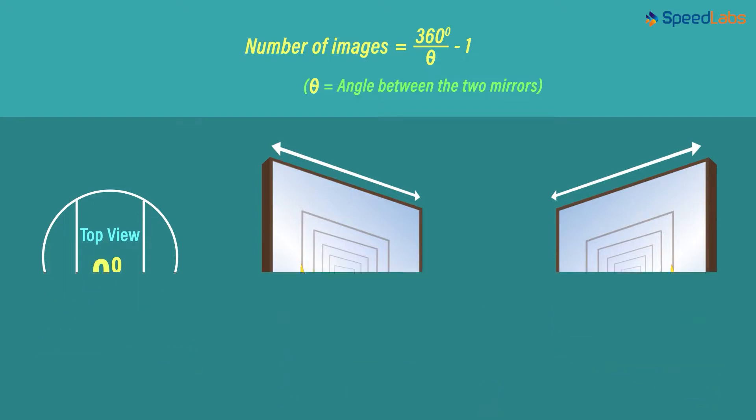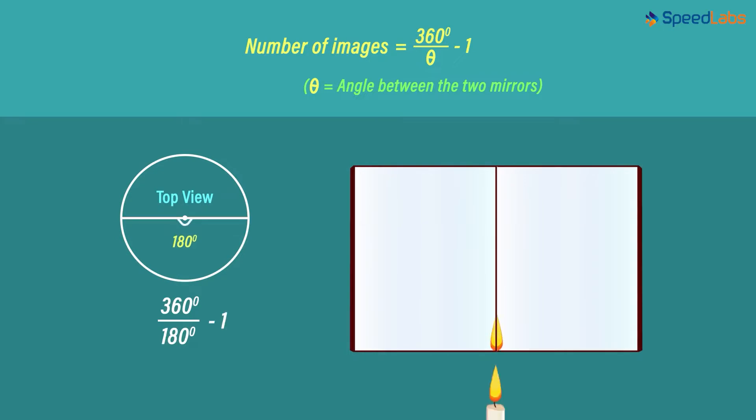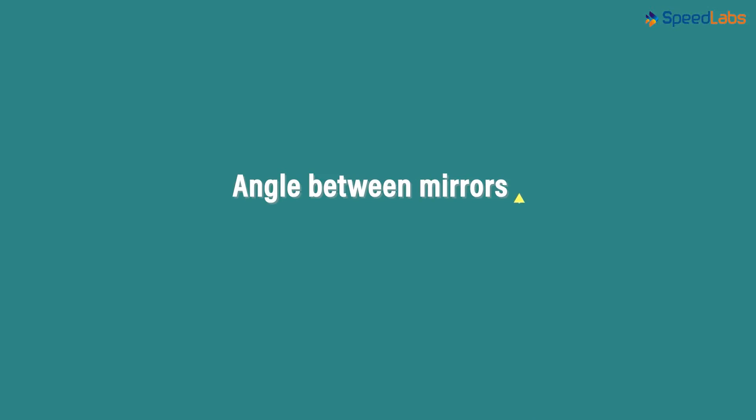When the angle between the mirrors is 120 degrees, two images of the candle will be formed and when they are kept at 180 degrees, only one image will be formed. As we increase the angle between the mirrors, the number of images decreases.